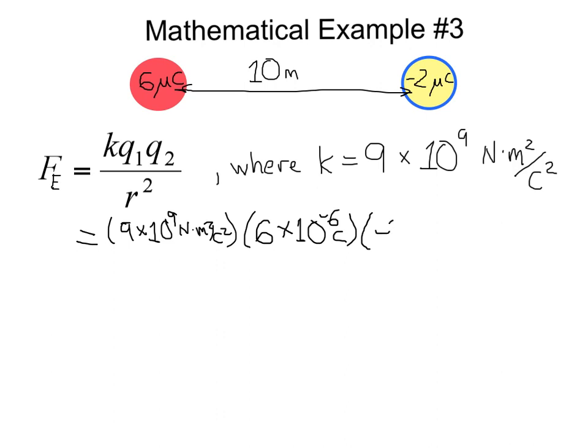And similarly, negative 2 microcoulombs is negative 2 times 10 to the minus 6th coulombs. We'll divide all that by the distance apart, which is 10 meters, and we have to square that. So pause the video for a moment. Do your calculations. Be sure to input the exponents correctly into your calculator as well.